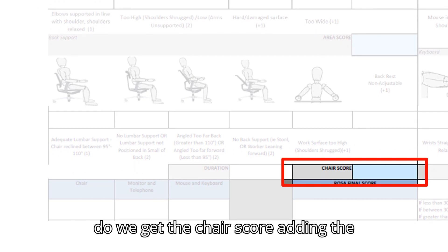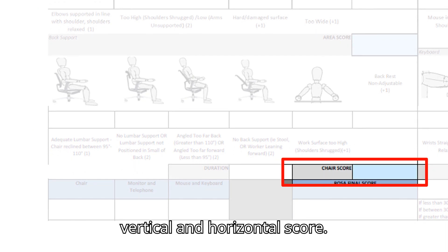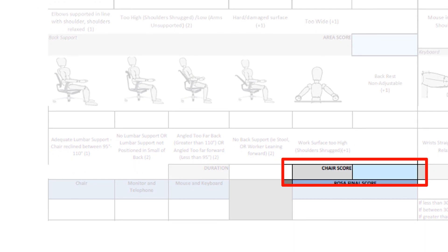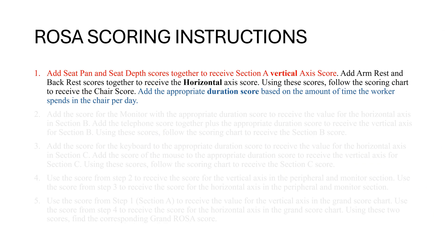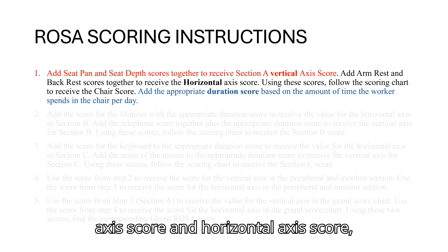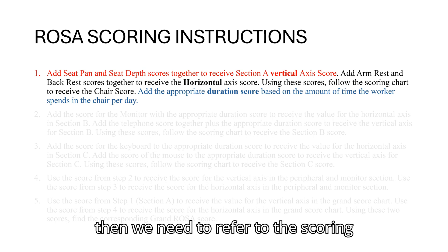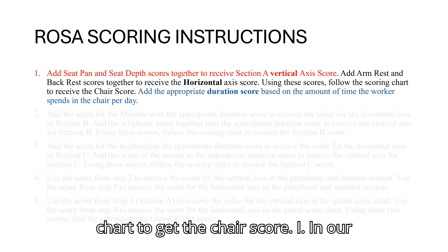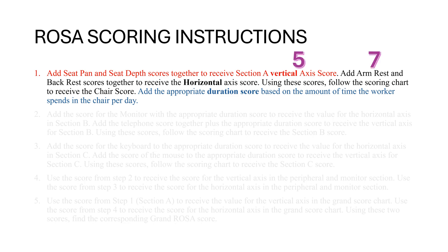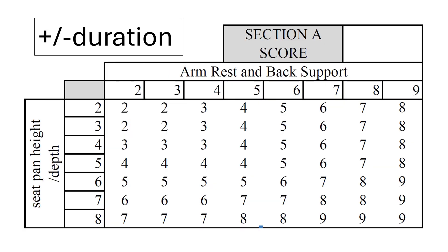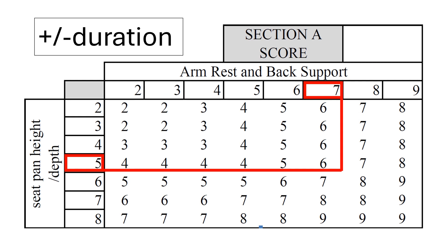To get the chair score, we do not simply add the vertical and horizontal scores. Instead, we refer to the ROSA scoring chart. In our case, the vertical axis score is 5 and the horizontal axis score is 7. Referring to the chart, we get a section score of 6.